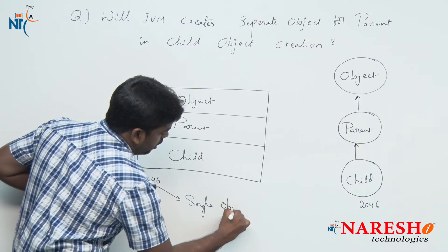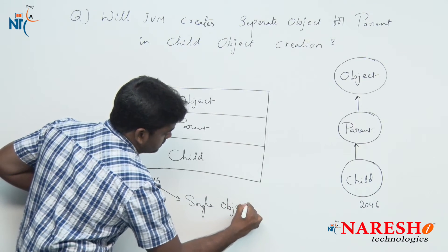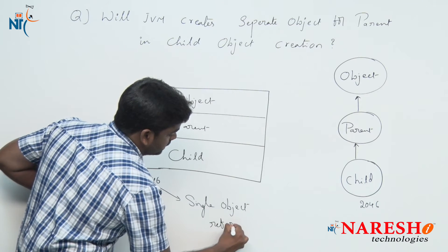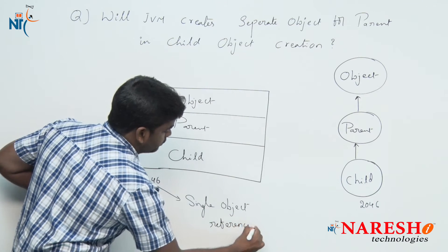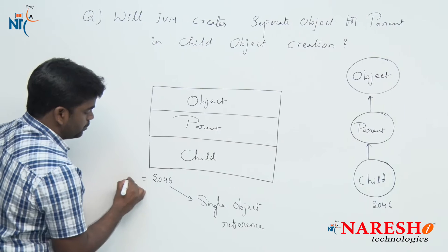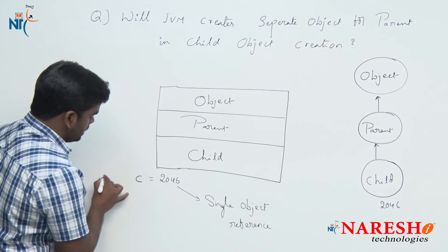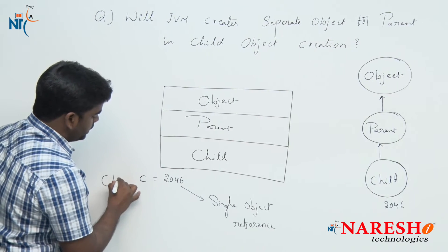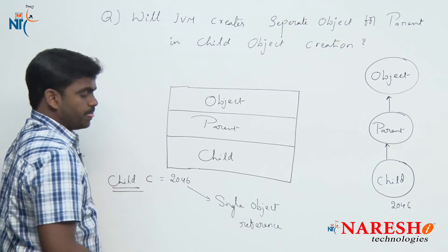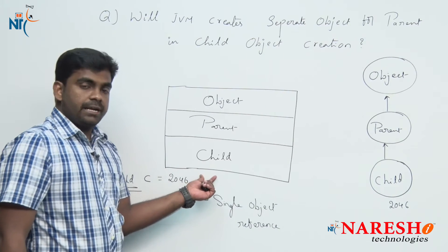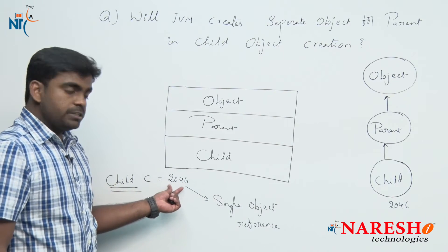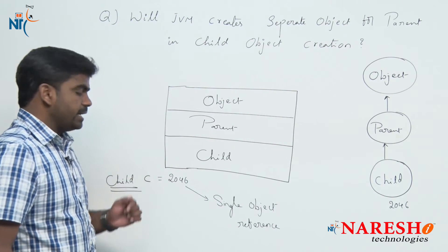There is a single object reference and we should collect this object reference into a variable of child type only. It should be of type child type. The object reference always belongs to the child.